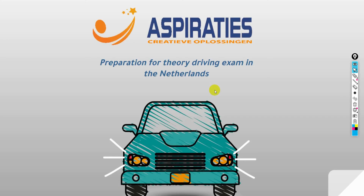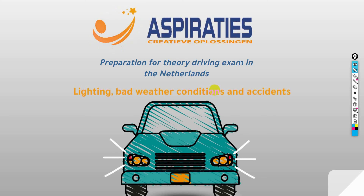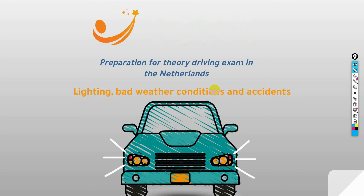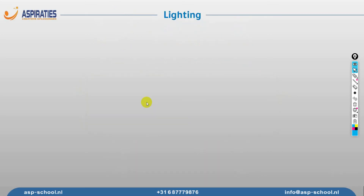Hello my friends and welcome to a new session of our preparation for the theory exam in the Netherlands. In today's session we are going to talk about lighting, bad weather conditions, and accidents. For example, if you hit an animal while traveling from one city to another — say a deer ran in front of you and you couldn't avoid it — are you allowed to leave and continue your journey? We'll answer that today.